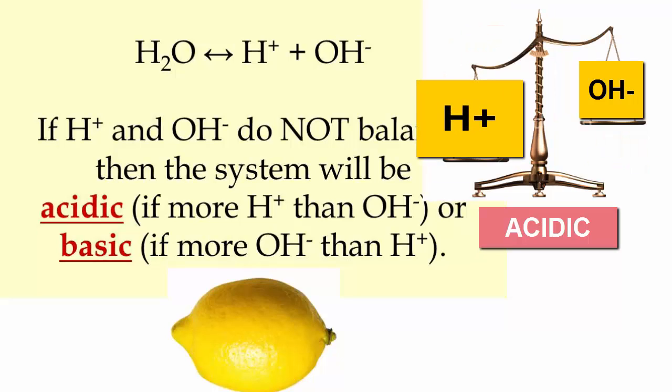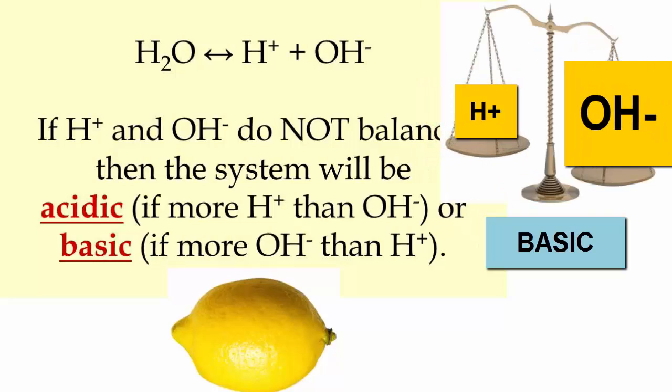But when H+ increases or OH- decreases and there's more H+ in the system than OH-, we call the system acidic. The larger the difference, the more acidic. And the reverse: more OH- than H+ will cause the system to become increasingly basic.